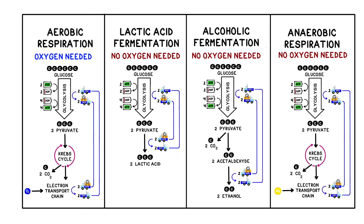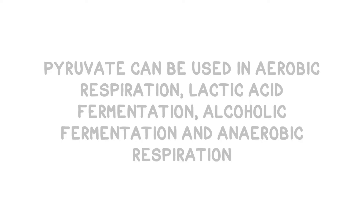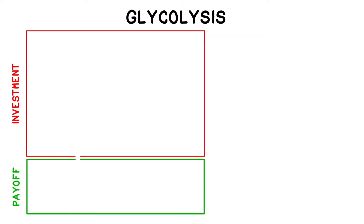All four of these processes begin with the same set of reactions: glycolysis. In summary, glycolysis involves breaking down one molecule of glucose to eventually form two molecules of something called pyruvate. Pyruvate is a very versatile molecule — it can be used in aerobic respiration, lactic acid fermentation, alcoholic fermentation, and anaerobic respiration. Glycolysis is split into two phases: the energy investment phase and the energy payoff phase.